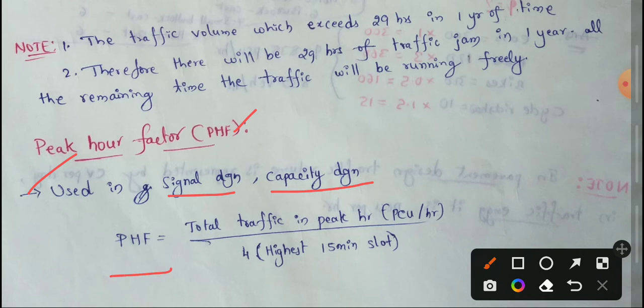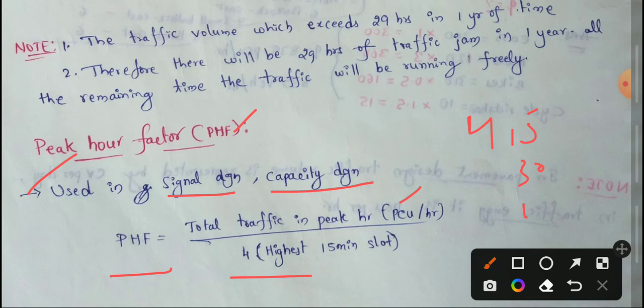Peak hour factor is equal to total traffic in peak hour — that means PCU per hour, passenger car unit per hour — divided by 4 into the highest 15-minute slot. Every hour is divided into 4 units of 15 minutes each: 15 minutes, 30 minutes, 45 minutes, 60 minutes — one hour, so there are 4 slots. The traffic information is used in the 15-minute slot.